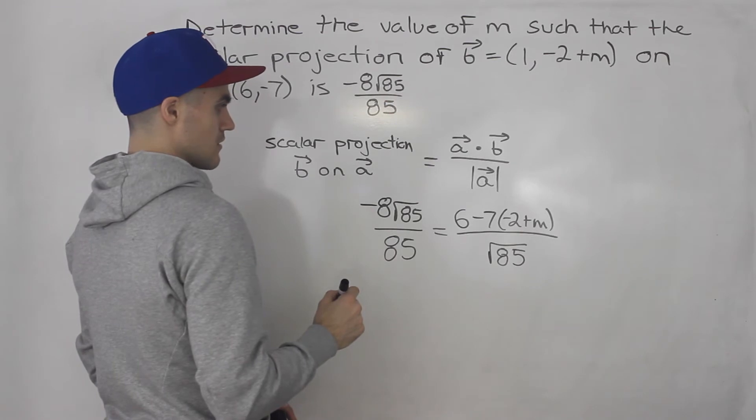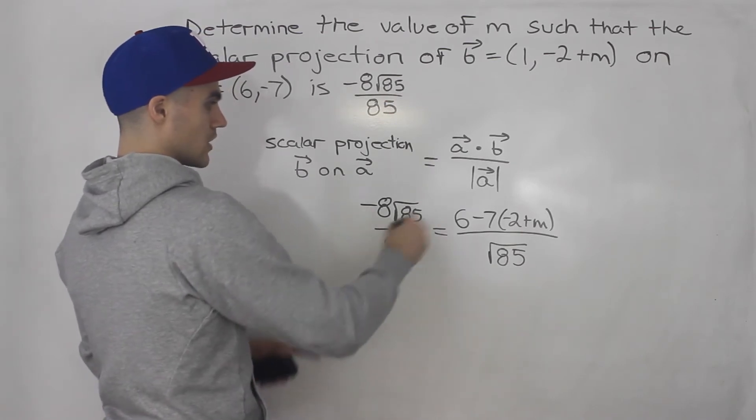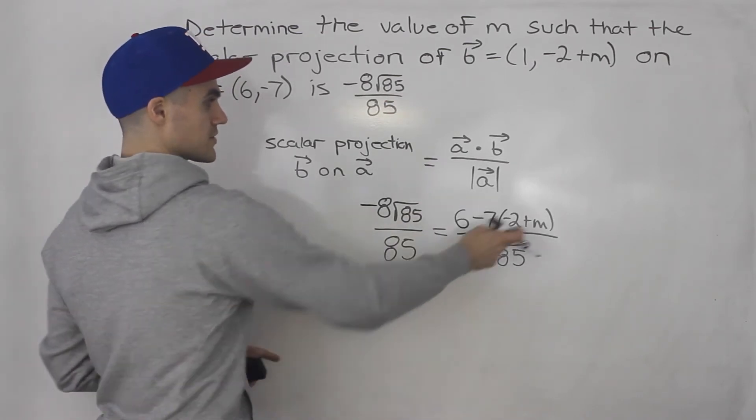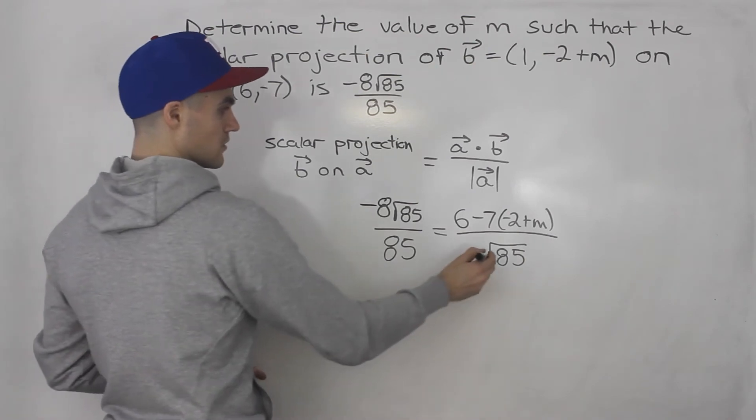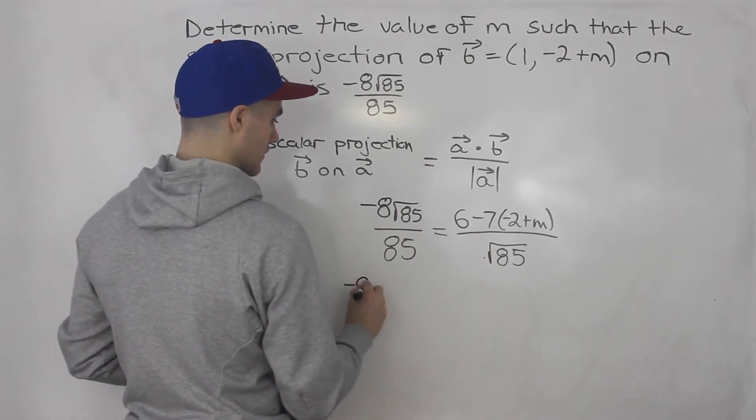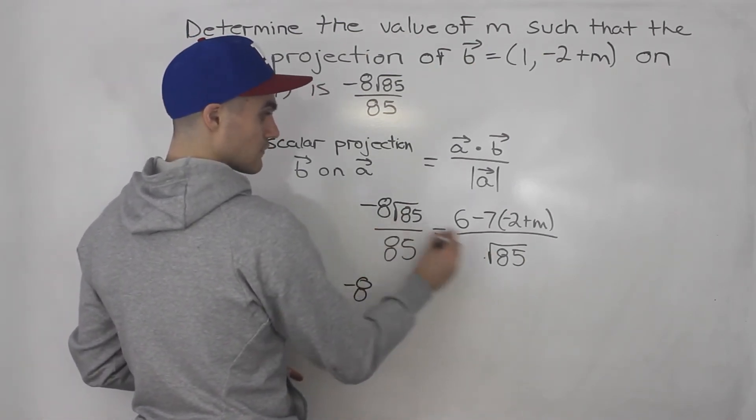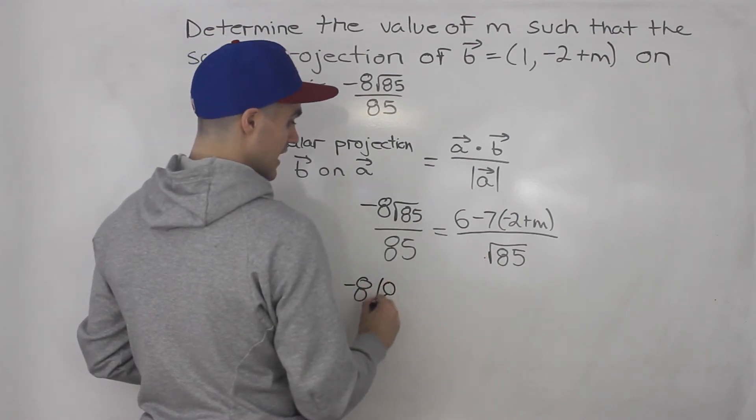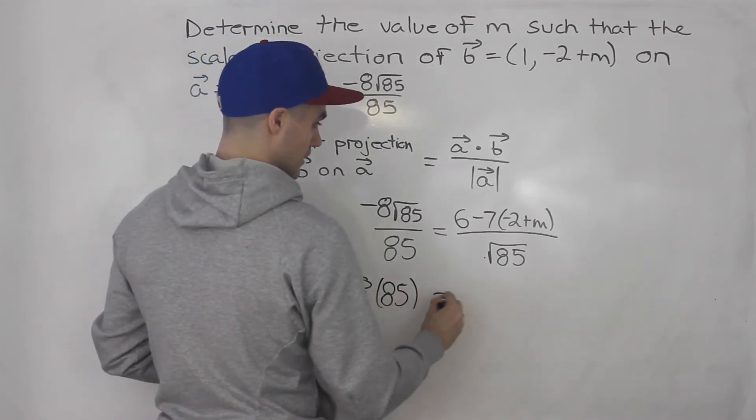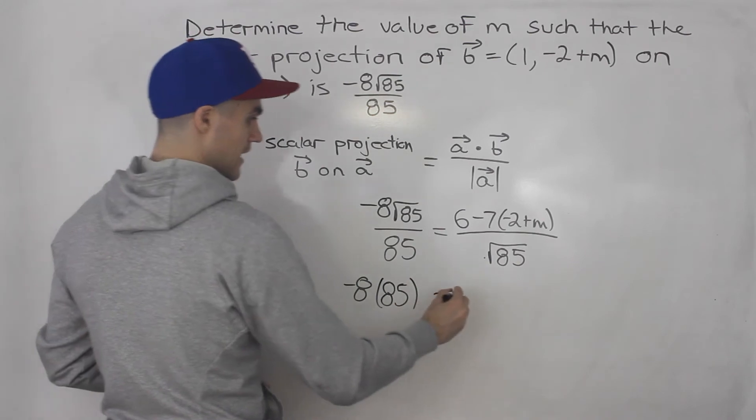And now notice that we can cross multiply and solve for this m value. So this times this, we'd have -8 and then √85 times √85, that just gives us 85, and then we'll have 85